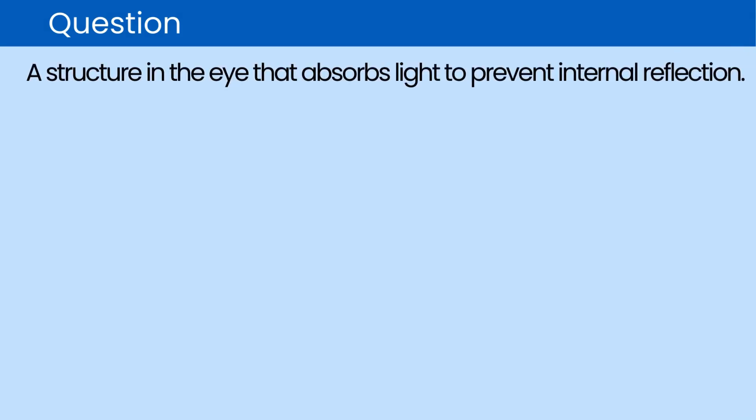Question. A structure in the eye that absorbs light to prevent internal reflection. The correct answer is choroid.